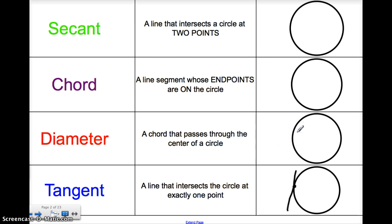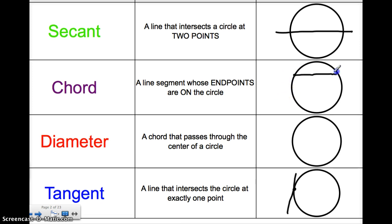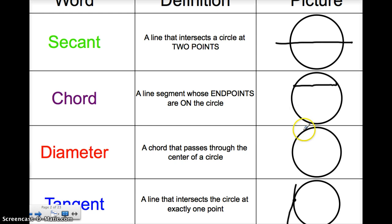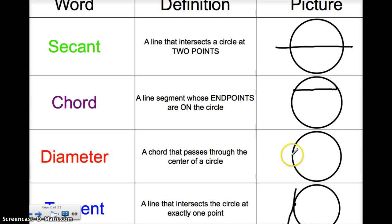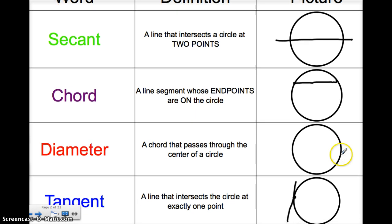So these are your four basic definitions. A secant goes through the circle. A chord has endpoints on the outside of the circle. A diameter is a chord that goes through the center. And finally, a tangent touches the circle at exactly one point.